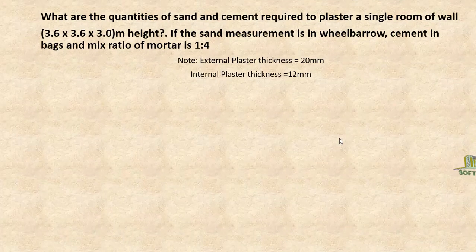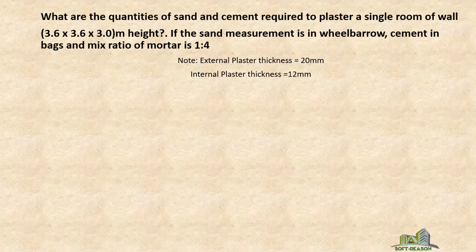We want to resolve this question: What are the quantities of sand and cement required to plaster a single room of wall 3.6 by 3.6 by 3 meter height, if the sand measurement is in wheelbarrow, cement in bags, and mix ratio of mortar is 1:4? Also take note: external plaster thickness equals 20mm, internal plaster thickness equals 12mm.